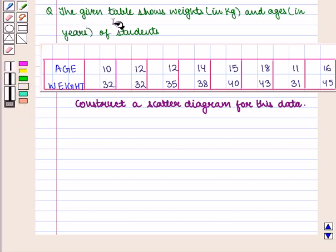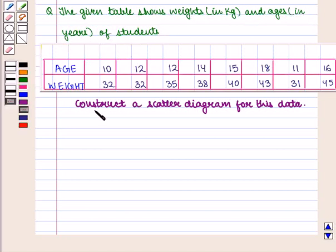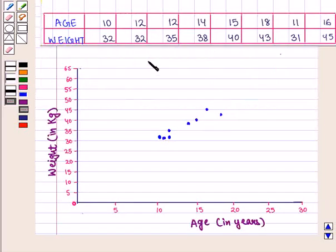Let us consider the following example. The given table shows weights in kilograms and ages in years of students. We have to construct a scatter diagram for this data. Now this is the required scatter diagram for the given data. Here we have taken age along the horizontal axis and weight along the vertical axis.